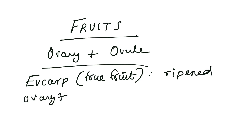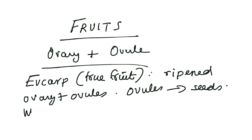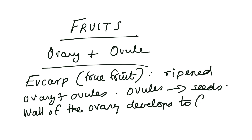The first and most important classification is eucarp, which means 'true fruit.' It means the fruit is developing from the ovary and the ovule, where the ovule later becomes the seed. This standard basic development is called eucarp. Note that the wall of the ovary later becomes the pericarp.